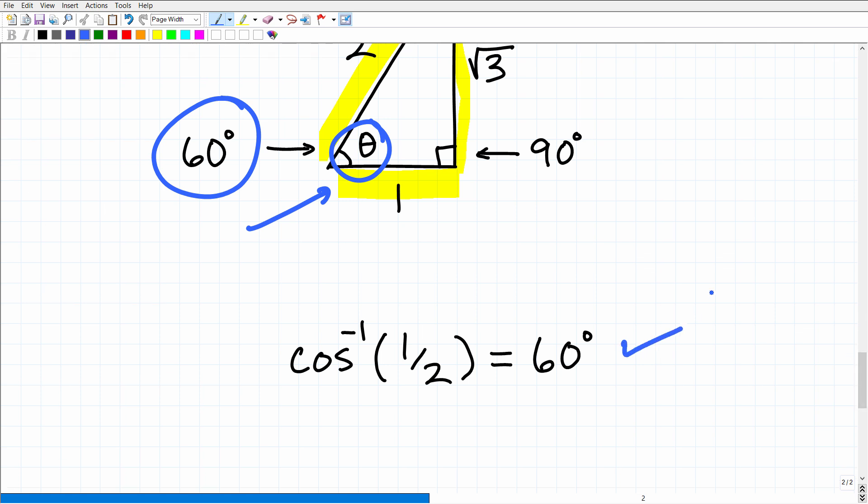All right. Now, I did mention calculators, right? So you could, obviously, if you need to use a calculator or can use a calculator, you could just find the arc cosine of 1 half. Make sure your calculator is in degree mode. And again, you would end up with 60 degrees.